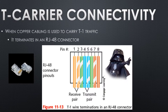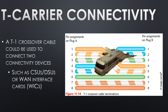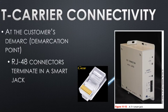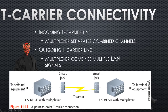T-carriers run over copper with RJ48 connectors that look nearly identical to Ethernet connectors. You can do crossover cables, same as with Ethernet, to connect two devices. There's a little modem-like device that translates from T1 into 24 different Ethernet lines coming out the side. Here's the map: terminal equipment is your stuff, DCE is their stuff connecting to the internet and other DCEs, and eventually to other terminal equipment.